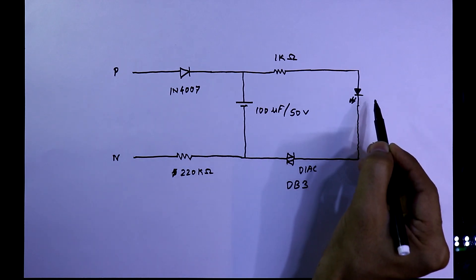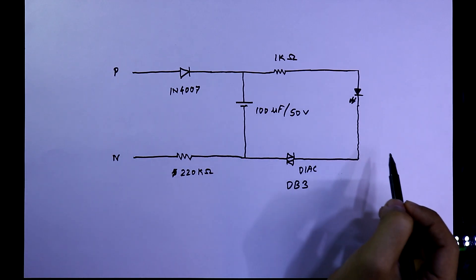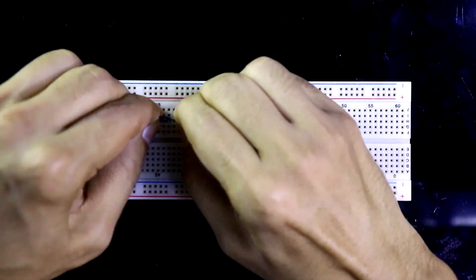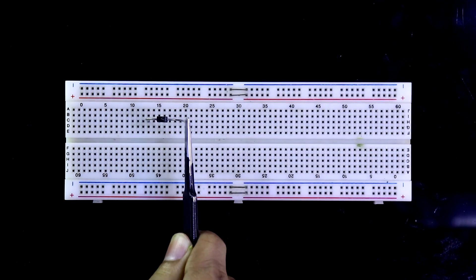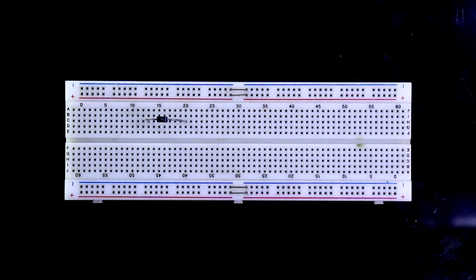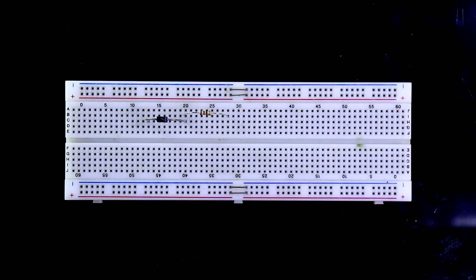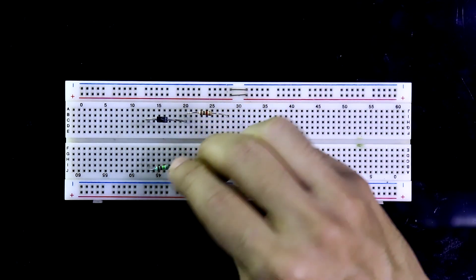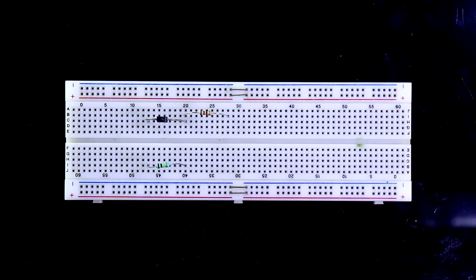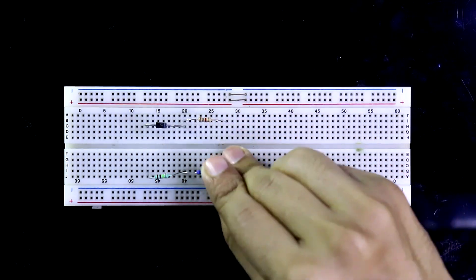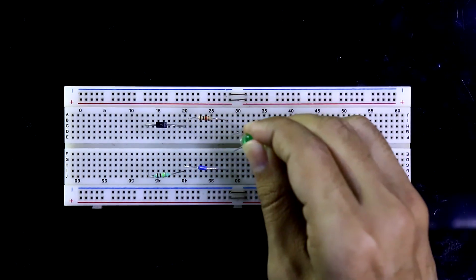Now we'll see this on practical. Here is our diode on the outside cathode side and one kilo ohms resistor, and on this side this is 220 kilo ohms resistor. And here this is the DIAC DB3 with the 220 kilo ohms I have connected it.